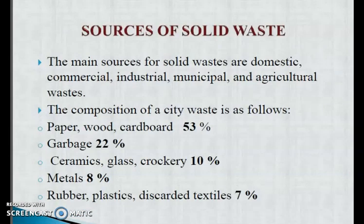The major sources of solid waste are domestic, commercial, industrial, municipal and agricultural. The composition of city waste is approximately: 53% paper, wood, cardboard and garbage; 10% ceramic, glass and crockery items; 8% metal; and 7% rubber, plastic and discarded textiles. This is a rough estimation that varies depending on each city.